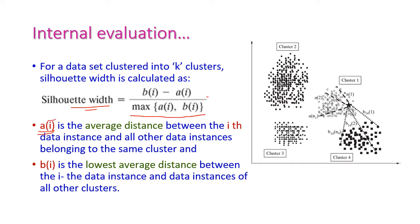Here, A(i) is the average distance between the ith data instance and all other data instances in the same cluster. For example, the star is a data item of cluster 1, and A(i) is the distance between it and all the other data items in the same cluster. When it comes to B(i), it is the lowest average distance between the ith data instance and the data instances of all other clusters. The B(i) value will be high compared to A(i), because A(i) measures distances within the same cluster while B(i) measures distances to other cluster data items.